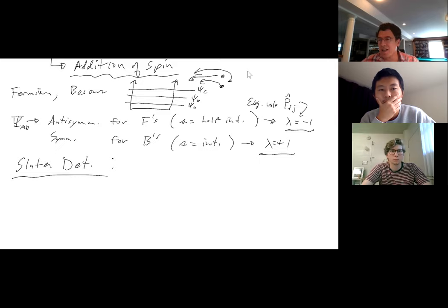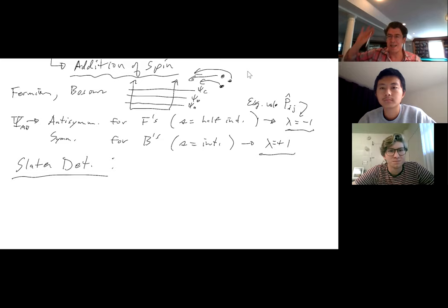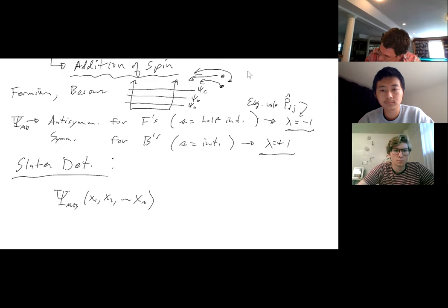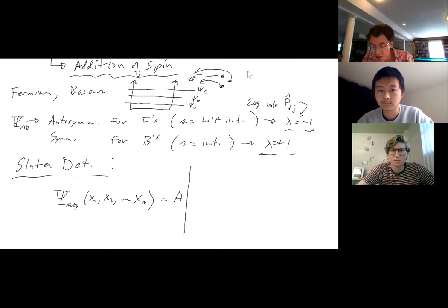This is the first live lecture we're having, so if something is really unclear, go ahead and shout out because I'm focused on the iPad. The Slater determinant allows us to construct the many-body wave function of N particles, x1, x2, all the way to N. It has some normalization factor, which is slightly different depending on whether you have fermions or bosons.